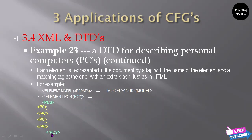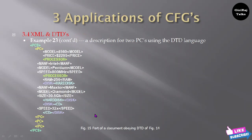A description for two PCs using the DTD language shows each tag with a matching closing tag using an extra slash. If you open a PC tag, it must be closed by the same matching tag with extra slash. Any content and tags can be inserted in between. For a processor element, model, manufacturer, and speed are mentioned between the two matching tags. If you do not mention the matching tag, you may get an error, which comes under weak typing — these errors won't appear at compile time, but at runtime.